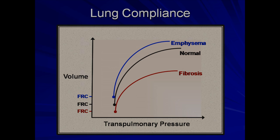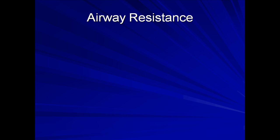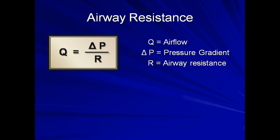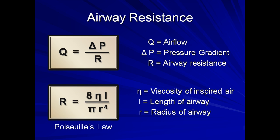In addition to compliance, the other major metric of lung mechanics in the mechanically ventilated patient is airway resistance. Airway resistance is related to air flow and the pressure gradient as follows: flow is equal to the pressure gradient divided by the resistance. Flow is equal to 8 times the viscosity times the length of the tube divided by pi and the tube's radius raised to the 4th power. Please do not bother memorizing this equation except to remember the key point that resistance to air flow is inversely proportional to the 4th power of the radius. Therefore, very small quantitative changes in the radius can have significant impact on resistance.